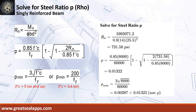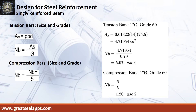The area of steel for tension bars is 4.71954 square inches, and the number of bars for 1 inch diameter is 6. The number of compression bars is 2.